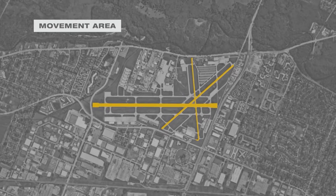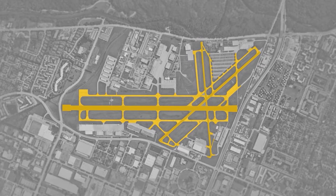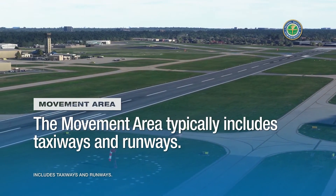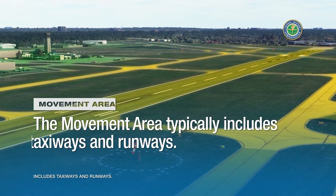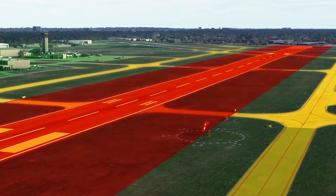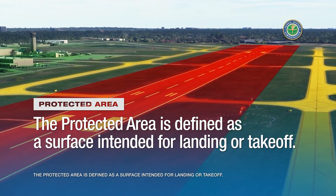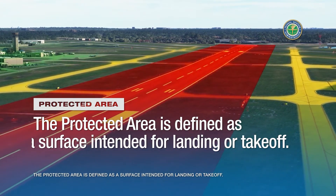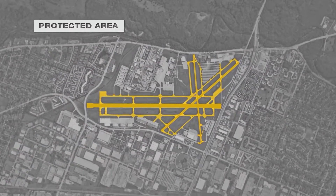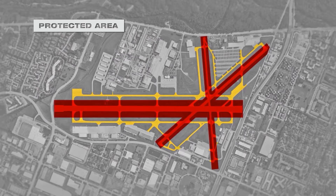The larger airfield movement area is the surface area of an airport used for taxiing, takeoff, and landing. The movement area typically includes taxiways and runways. Within the larger movement area is the protected area for each runway surface. The protected area is defined as a surface intended for landing or takeoff, including the area inside the runway holding position markings on paved taxiways or ramps, and the designated runway safety area.